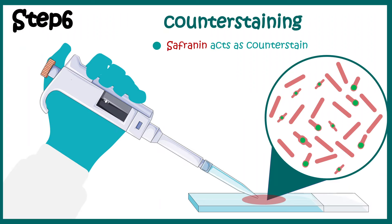In the decolorization step, a decolorizing agent is used to wash the stain. Bacteria that did not have endospores will not retain the stain — the decolorizing agent washes away all the malachite green from those bacteria. Since malachite green is soluble in water, it is easily wiped out from vegetative cells.